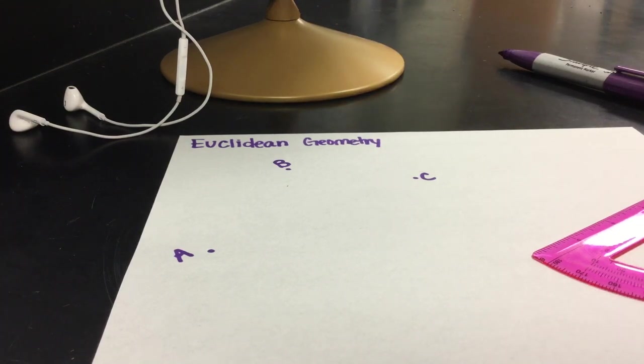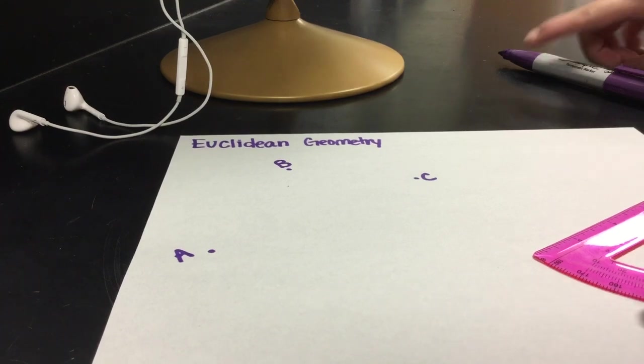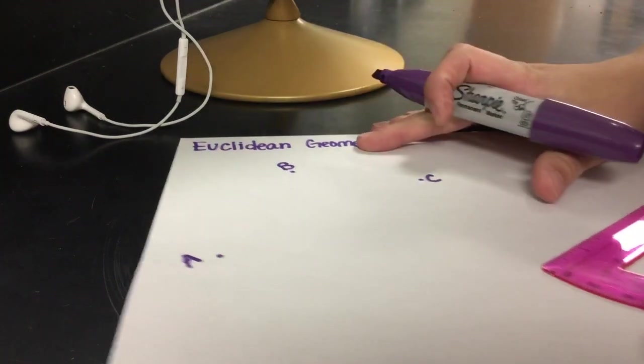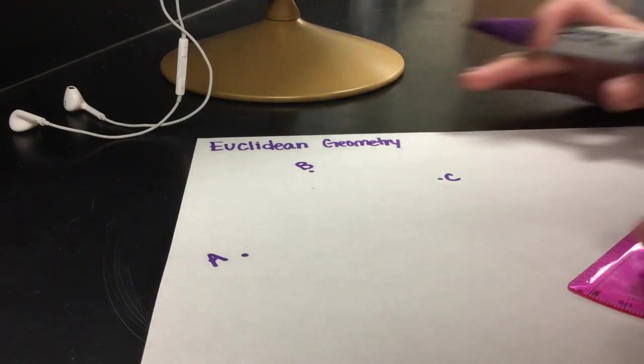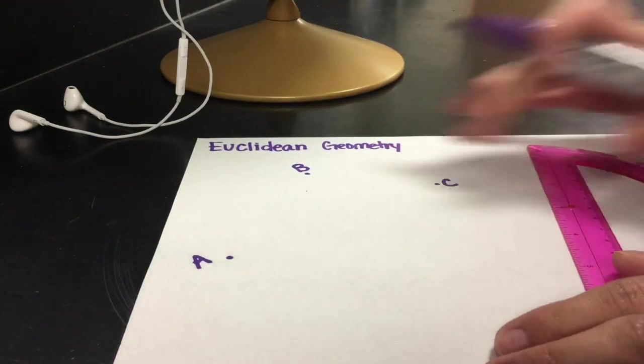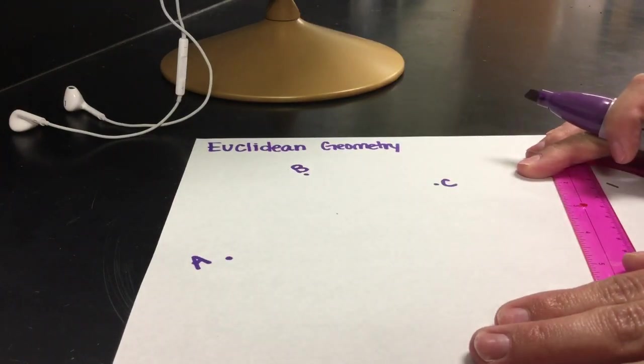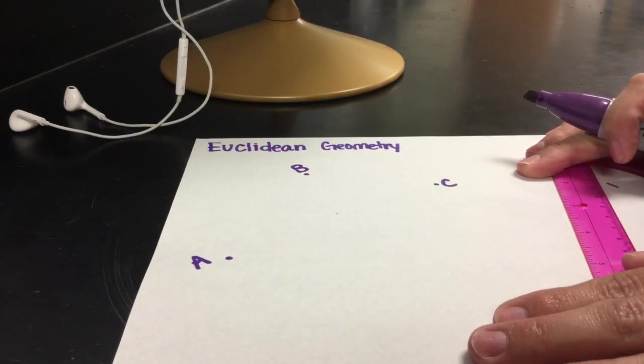Let's talk about Euclidean geometry. This is something that you are already familiar with, whether or not you realize that. What I have here on this piece of paper, which would represent a flat two-dimensional plane,